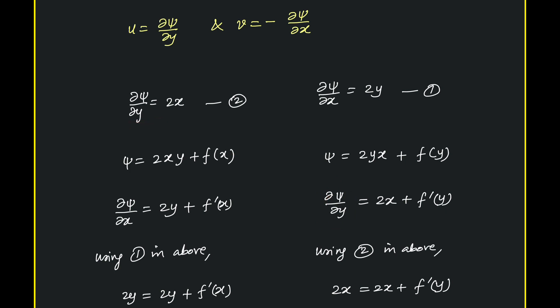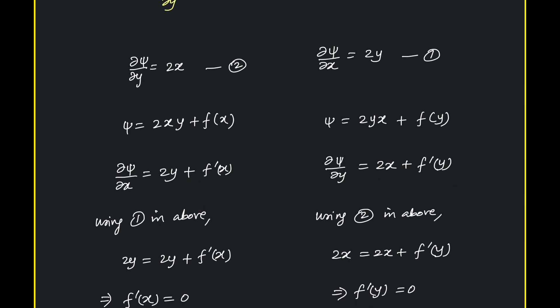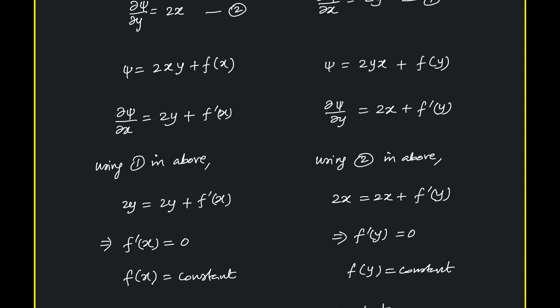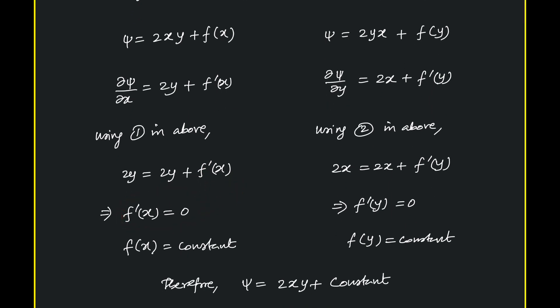Differentiating 2yx with respect to y, we get 2x, and differentiating f(y) gives f'(y). Now, using equation 1, since that is also ∂ψ/∂x, by comparing the two expressions, we get f'(x) equals 0. If f'(x) equals 0, then f(x) is a constant, because only a constant has a derivative of zero.